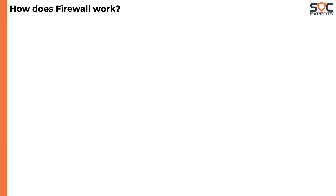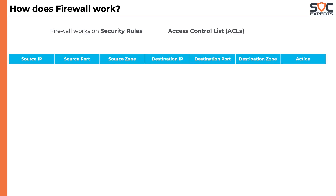As explained earlier, firewalls work on security rules. These rules are also called access control lists, or ACLs. A rule looks something like this — it has a source IP address, source port, source zone, destination IP, destination port, destination zone, and the action that the firewall should take.